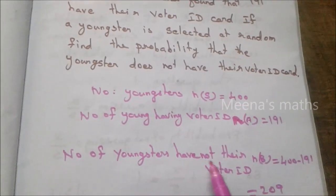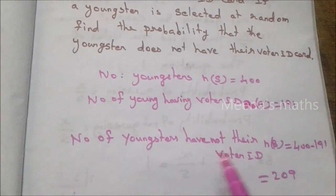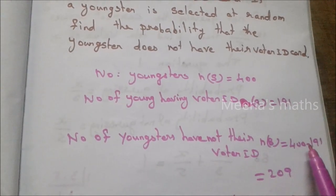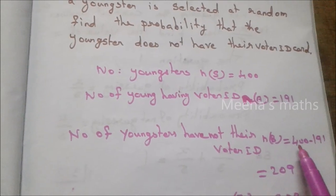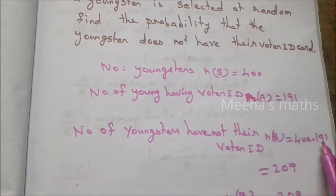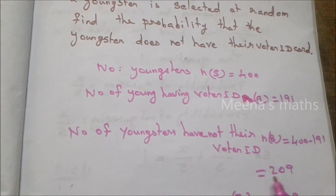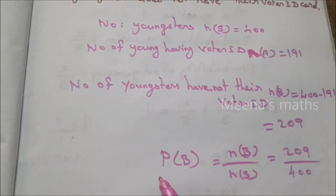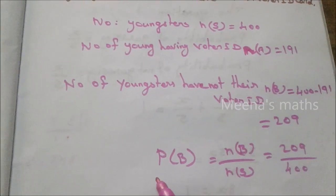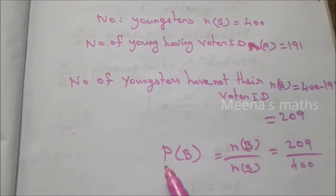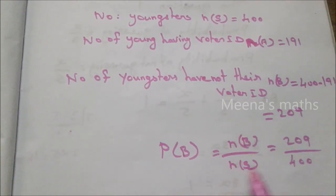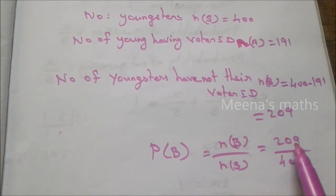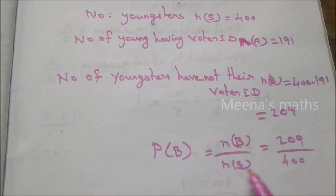Youngsters who do not have their voter ID card: N of A equals 191 have the card, so those without equals 400 minus 191 equals 209. This is N of B. Therefore, probability of not having voter ID equals N of B by N of S equals 209 by 400.